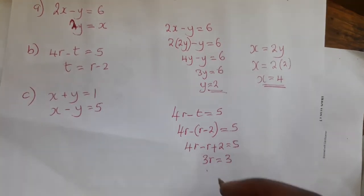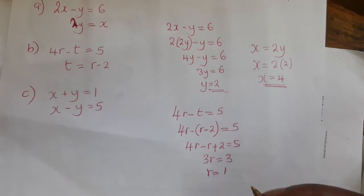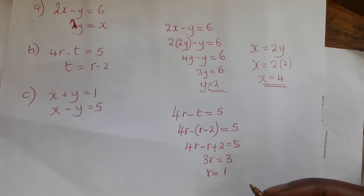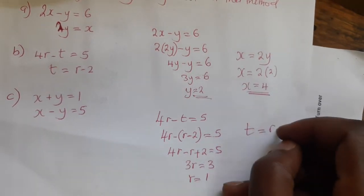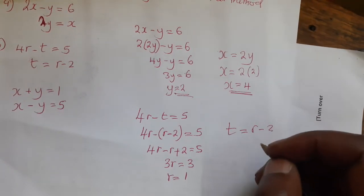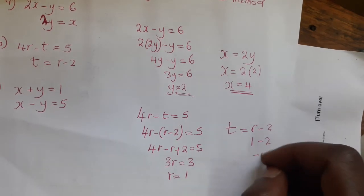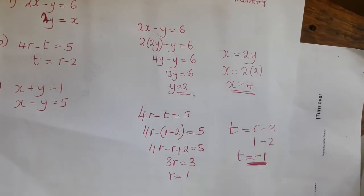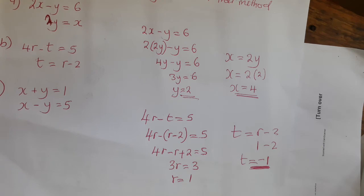This gives us 3r equals 5 minus 2, which equals 3. So r equals 1 after dividing both sides by 3. Then, since t equals r minus 2, and r equals 1, we get t equals 1 minus 2, which is negative 1.